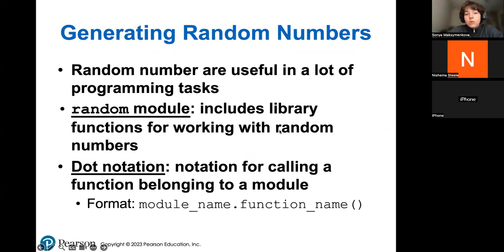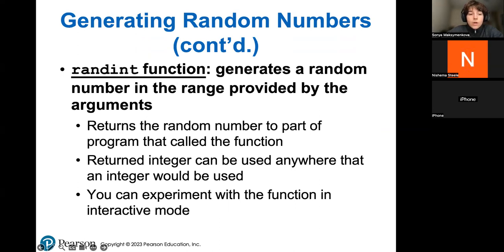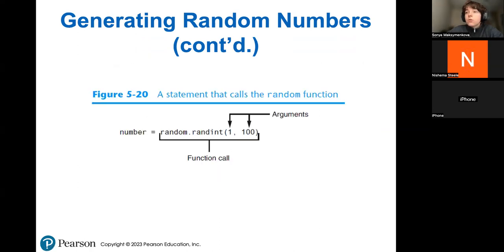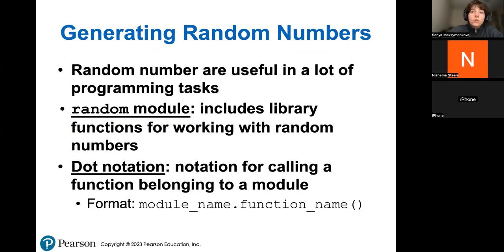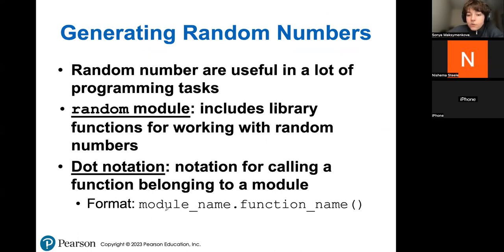Now, random numbers — you should also be familiar with random number generators. I'll show you a couple of useful functions that exist in Python, as there are a little bit more of them than in Java. First of all, the random module is the big file that contains all of the random functions that exist in Python. This is the dot notation — same idea as in Java: you write the module name, then put a dot, and then whatever function you want to call from that module.